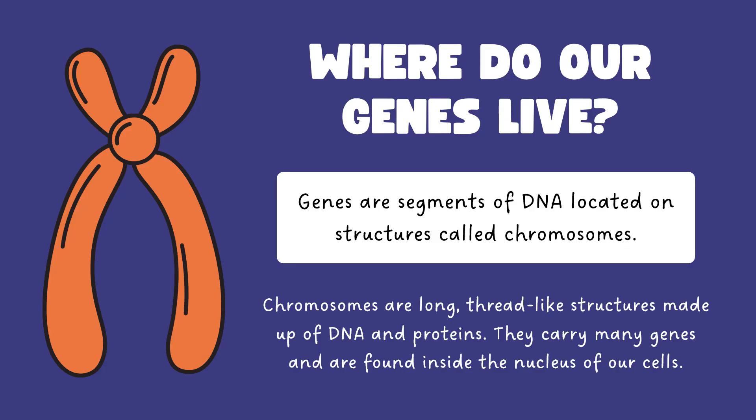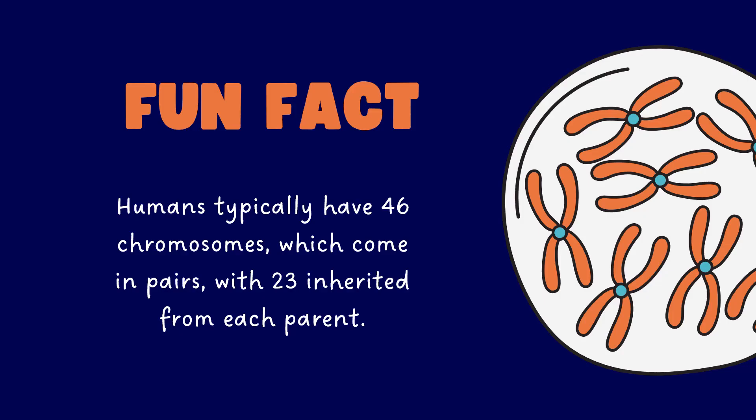Where do our genes live? Genes are segments of DNA located on structures called chromosomes. Chromosomes are long thread-like structures made up of DNA and proteins. They carry many genes and are found inside the nucleus of our cells. Humans typically have 46 chromosomes, which come in pairs, with 23 inherited from each parent.